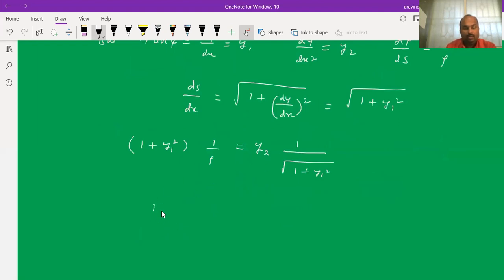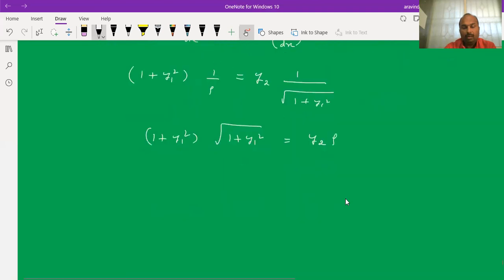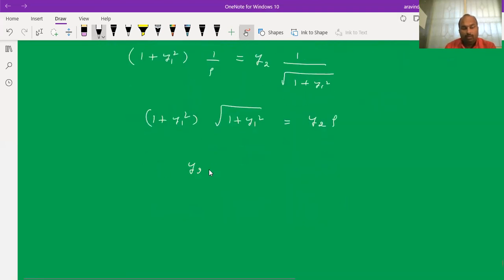If you cross multiply, what we will get is 1 plus y1 square multiplied by square root of 1 plus y1 square equals y2 times rho. So y2 times rho equals 1 plus y1 square times 1 plus y1 square to the power of 1 by 2. To the power of 1 and to the power of 1 by 2, that is 1 plus 1 by 2 is 3 by 2. Therefore, rho equals 1 plus y1 square to the power of 3 by 2 divided by y2.